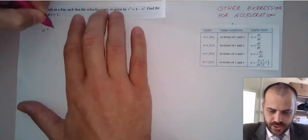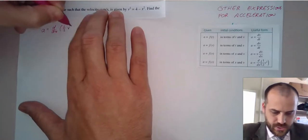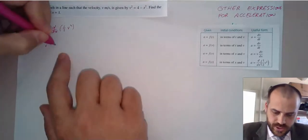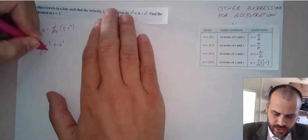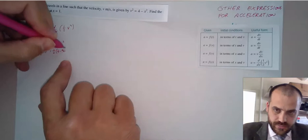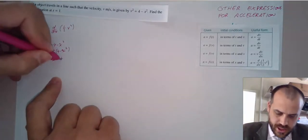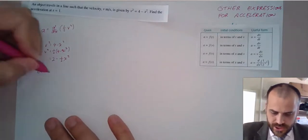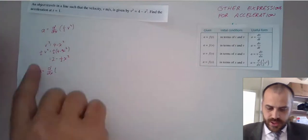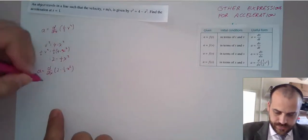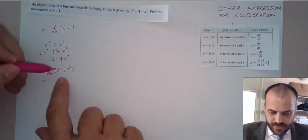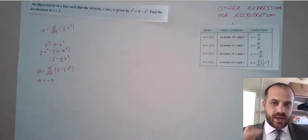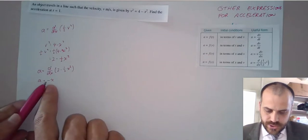We know that acceleration equals the derivative of half of v squared. What's half of v squared? We know that v squared equals 4 minus x squared, which means half of v squared equals half of (4 minus x squared), which is 2 minus one-half x squared. So acceleration equals the derivative of (2 minus one-half x squared). The 2 disappears, and 2 times negative one-half gives negative x. So we have a function for acceleration in terms of position: acceleration equals negative x.